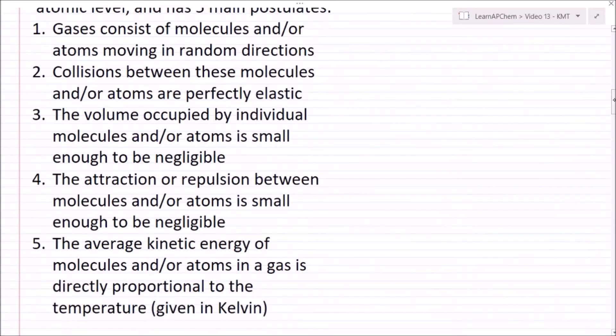It has five main postulates. The first is that gases consist of molecules and/or atoms moving in random directions. So if I have a bunch of gas molecules in some sample, these are gonna move in completely random directions without any predictor.